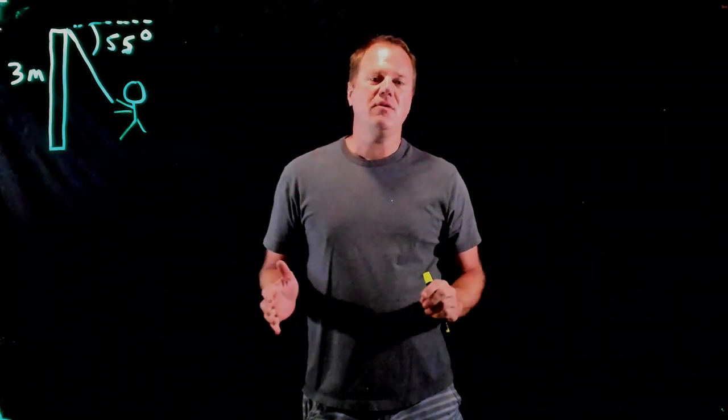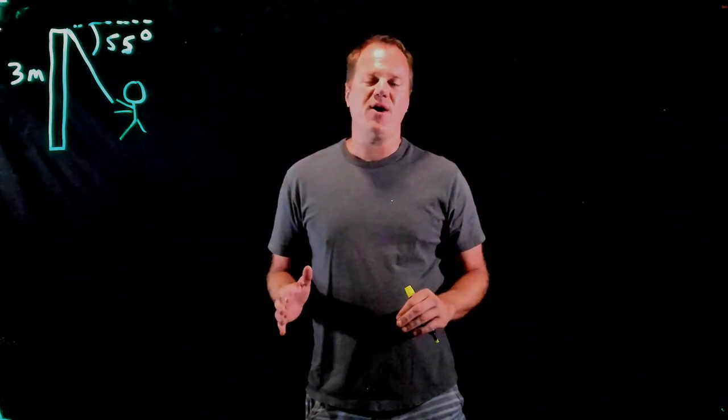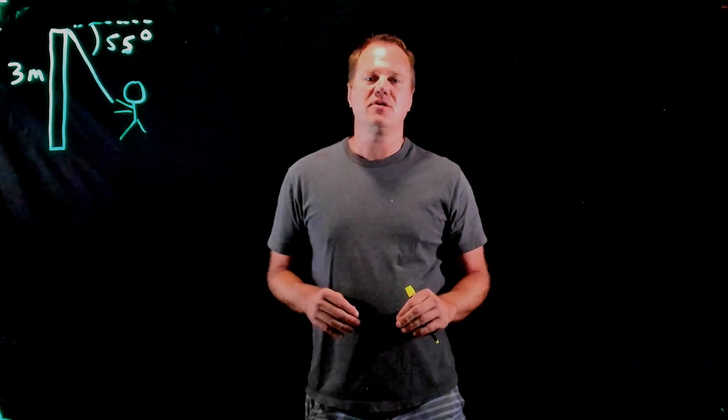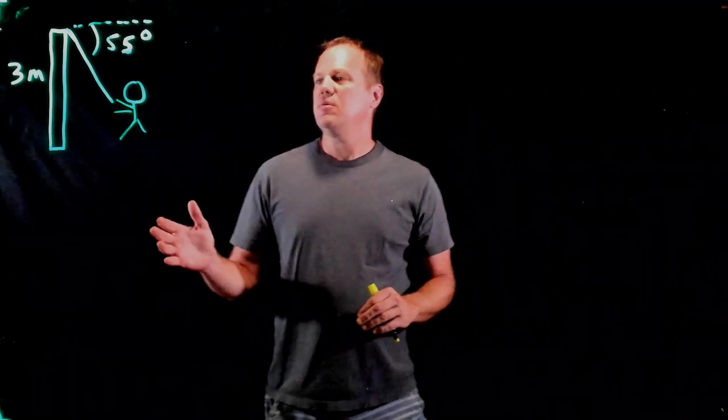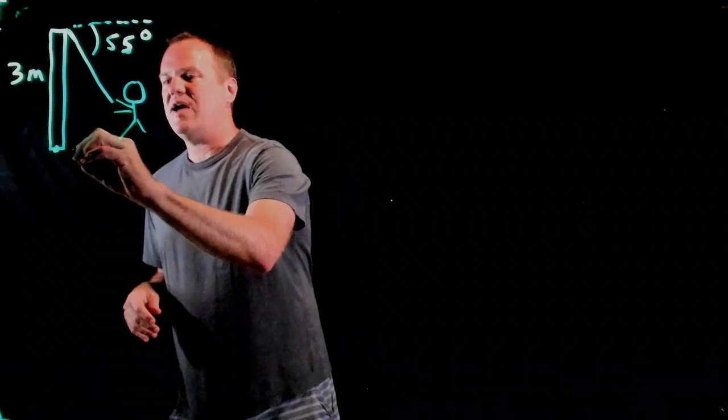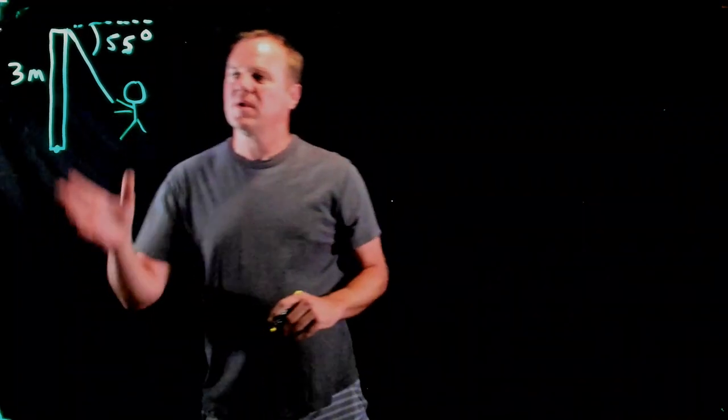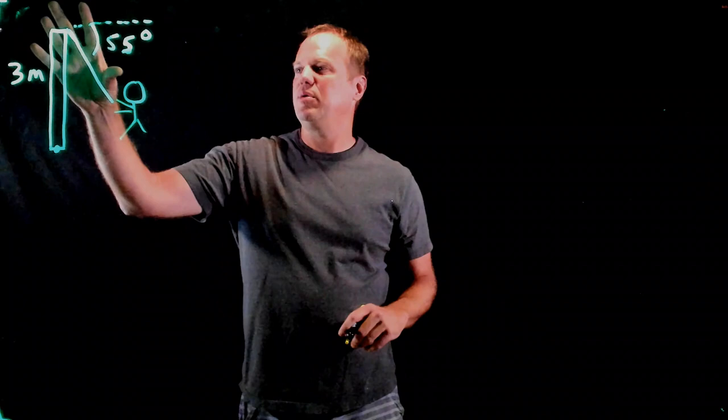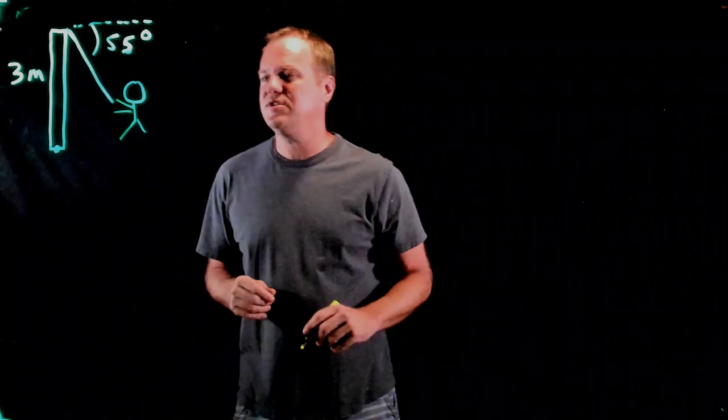Hi, I'm going to use the rotational analog to Newton's second law to solve the following problem. So we have a vertical post which is attached to a frictionless pivot point, and this person comes along and pulls on this rope which is attached to the top of it.